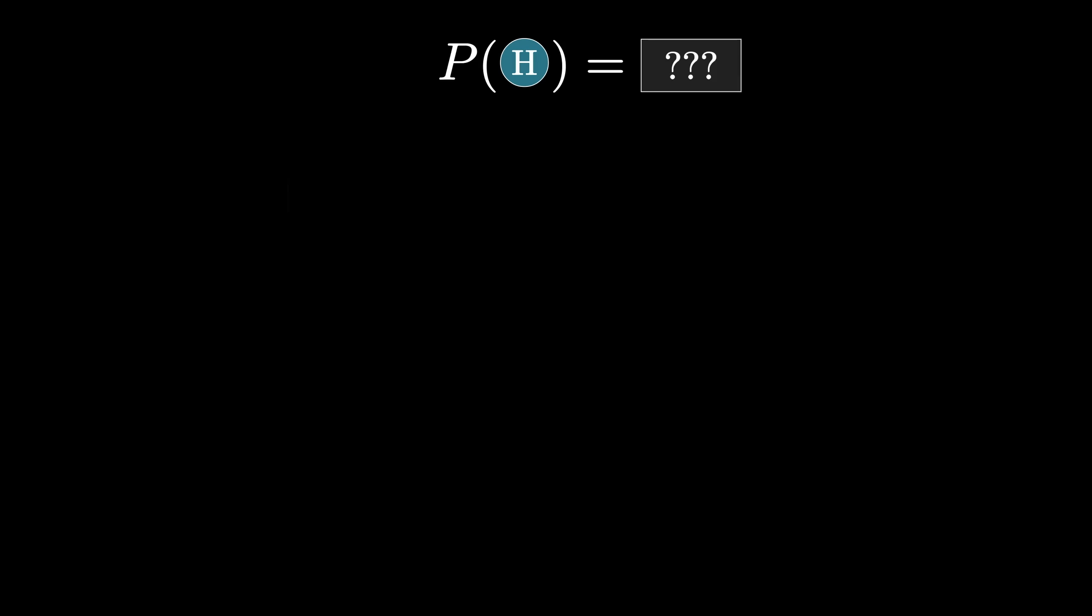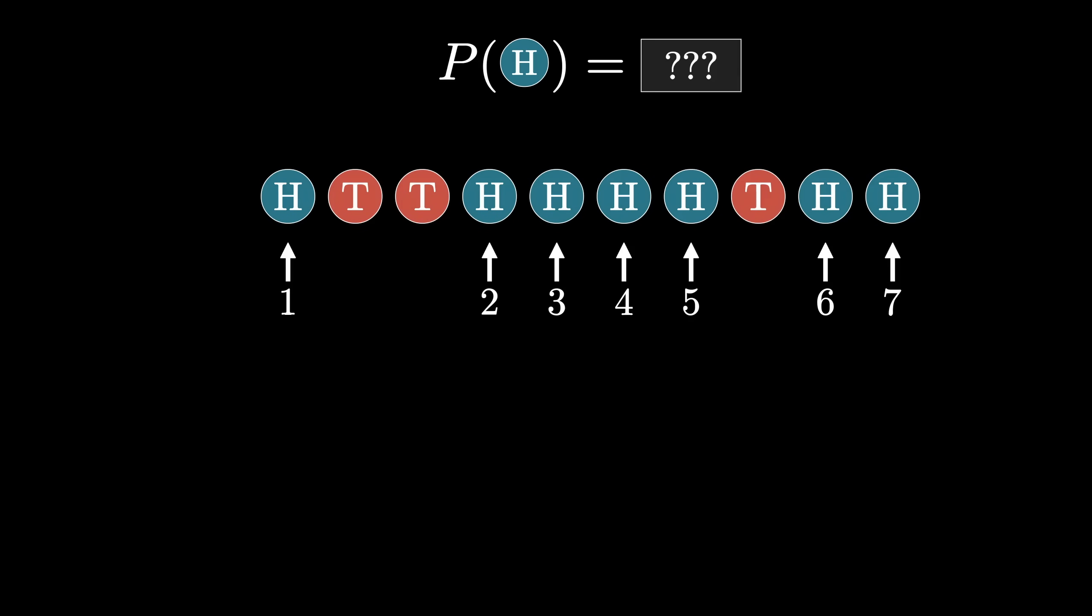But imagine that you flip this coin 10 different times, and 7 of those times it comes up heads. Do you think that the underlying weight of this coin is such that each flip has a 70% chance of coming up heads?